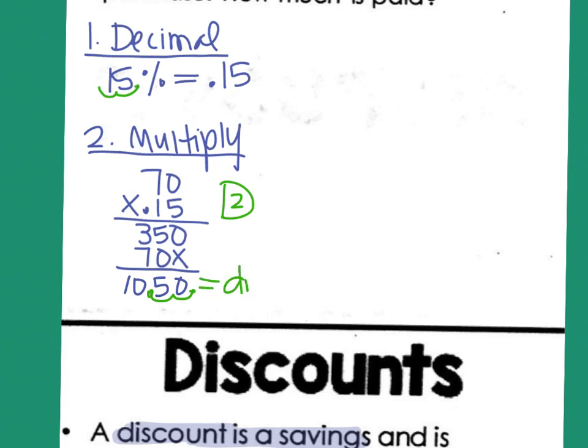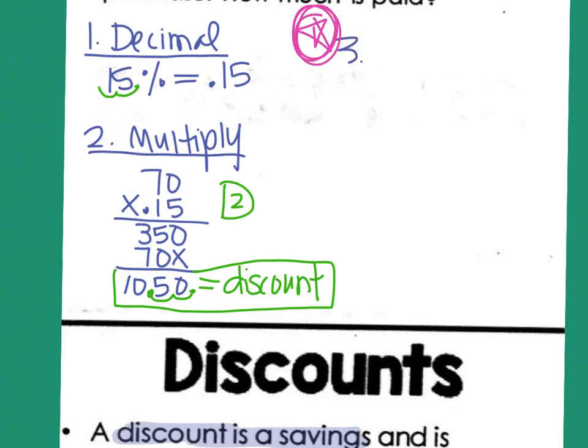This is going to be the amount of the discount. $10.50 is the discount that I'm going to subtract. Third step. This one, remember, was different on discounts. You get to subtract instead of add because you get to pay less money.